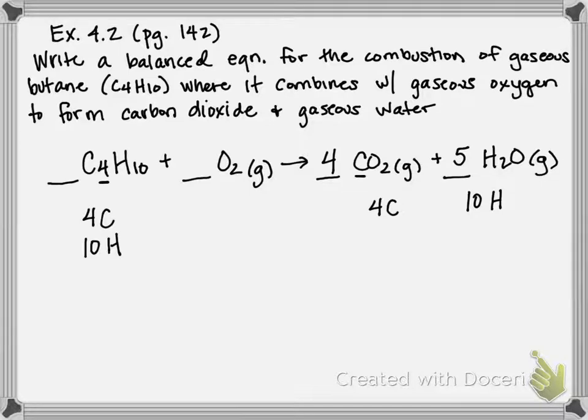Our next step is going to be to balance oxygen atoms. So on our reactant side we currently have two oxygen atoms, and on our product side we have four times two oxygen, so eight oxygen from our CO2, and five times one oxygen from our H2O. So if we add eight plus five oxygen, that means we have a total of 13 on our product side.